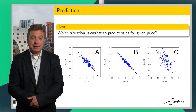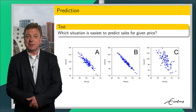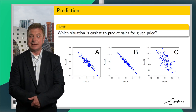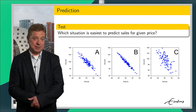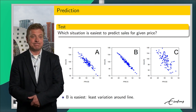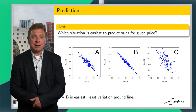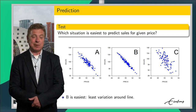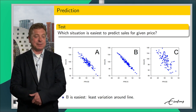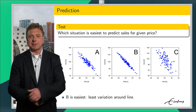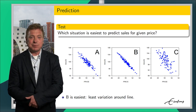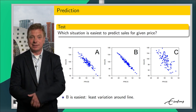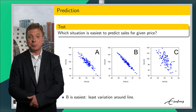Here is another test for you, which deals with the variation of points around the imaginary line and the quality of your predictions. The correct answer is Diagram B, because this diagram has the smallest variation around the imaginary line. And for a given price level, the range of potential forecasts for sales is smallest for Case B, so here you may expect to make better predictions.